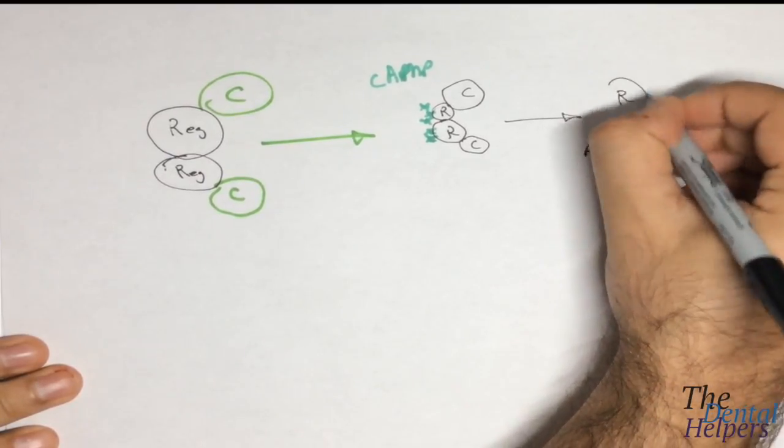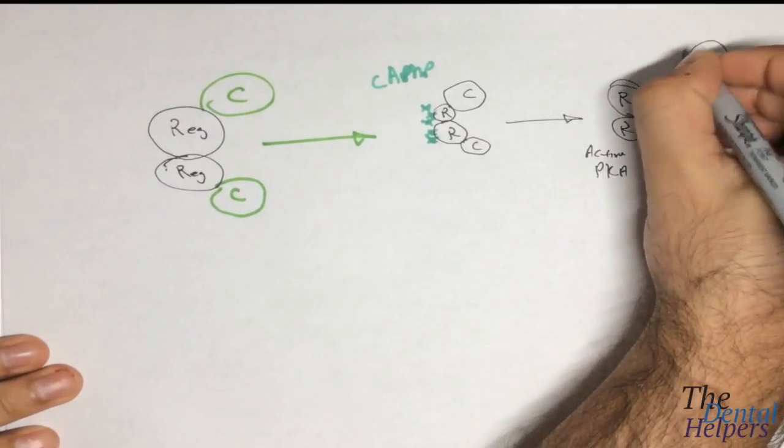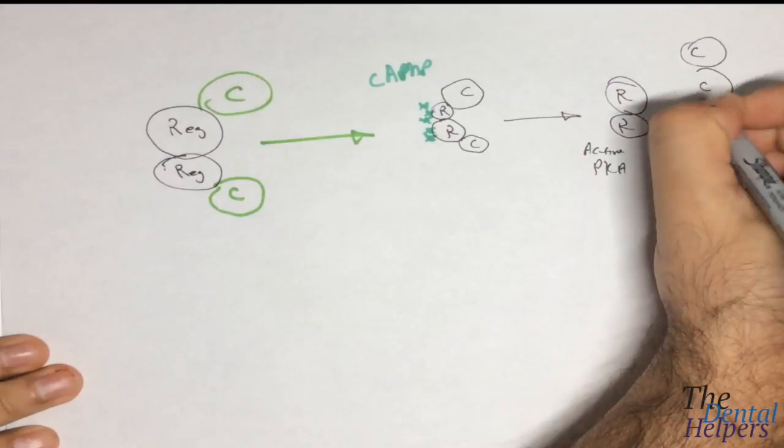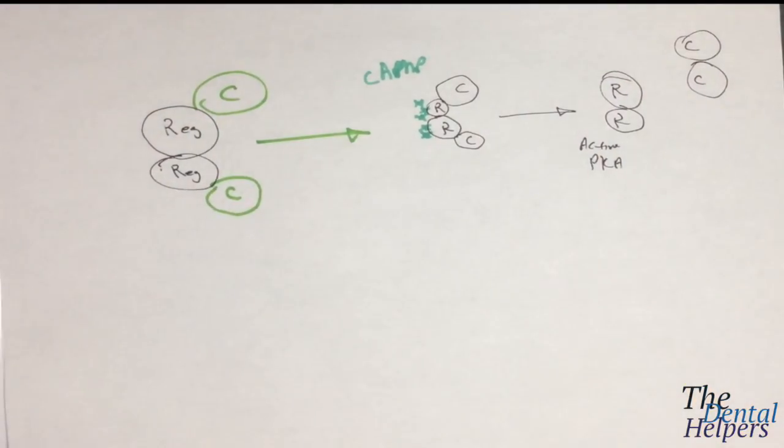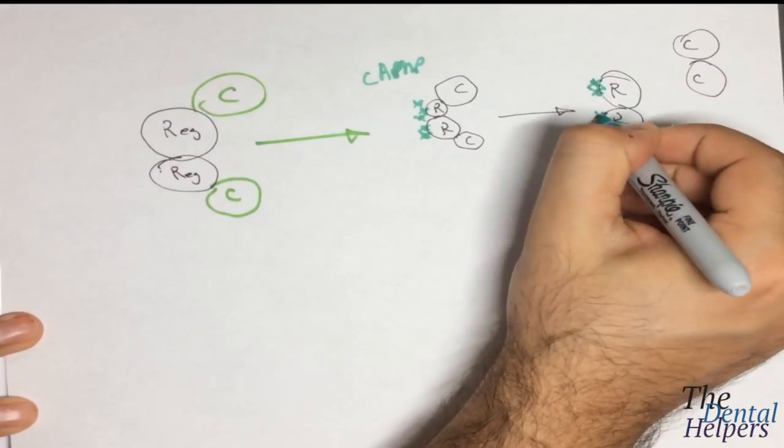So now we have the regulatory subunits, and the catalytic subunits are going to leave off. And this is only occurring again because it's cAMP-bound.